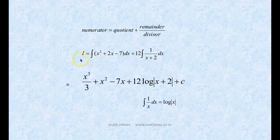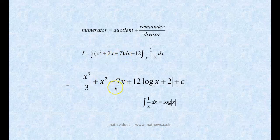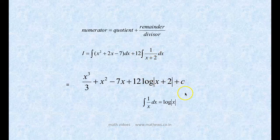The integral becomes: integral of x² + 2x - 7 + 12·(1/(x + 2)) dx. Integral of x² is x³/3. Taking out the 2, integral of x is x²/2, and the 2s cancel. Integral of dx is x. So we get x³/3 + x² - 7x plus 12 times the integral of 1/(x + 2).